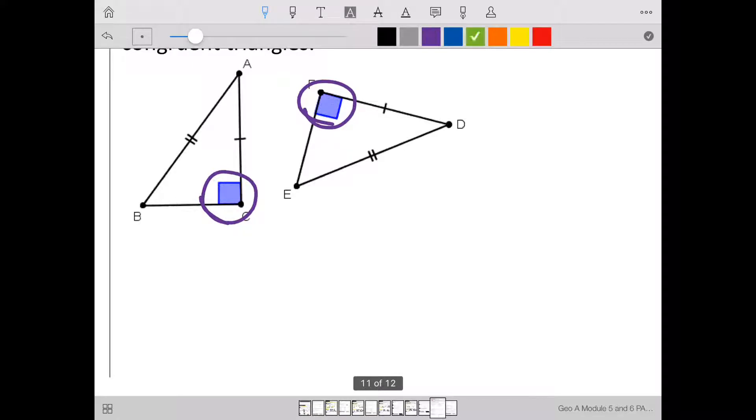Now, let's make sure we have the hypotenuse and at least one leg matching up. Well, the hypotenuse is always across from the right angle. Those are congruent. And we have a leg being congruent. So yes, these two triangles are congruent, and our reasoning is the HL theorem, hypotenuse leg.